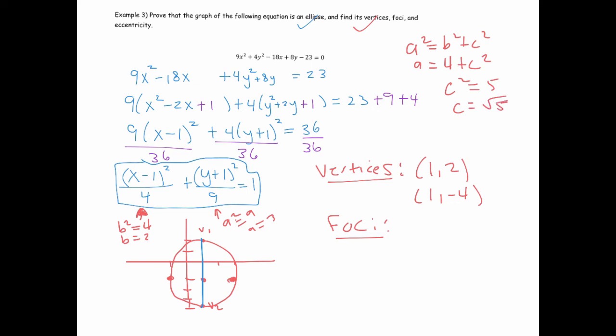So from the center I'm going to move up square root of 5 which is a little more than 2, so it should be somewhere around here. So that point there should have coordinates 1 comma negative 1 plus the square root of 5, and then on the other hand if we move down that distance we've moved to here and there's my other focus.